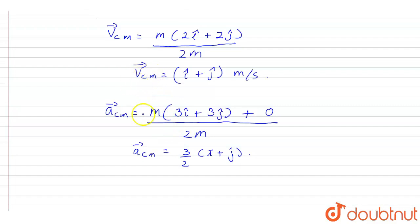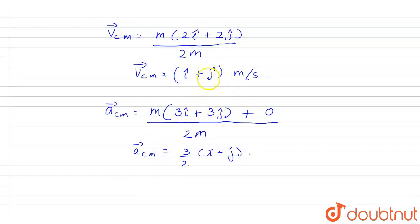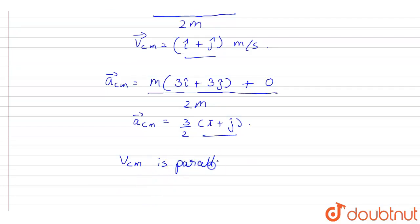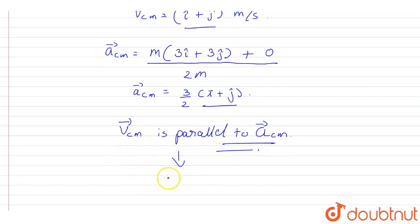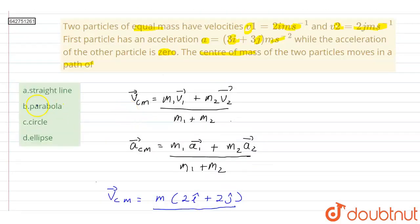From here we can see that the directions of vcm and acm are both along i cap plus j cap, which means vcm is parallel to acm. When both velocity and acceleration of a particle are parallel to each other, the particle moves in a straight line. So the correct option is option A.